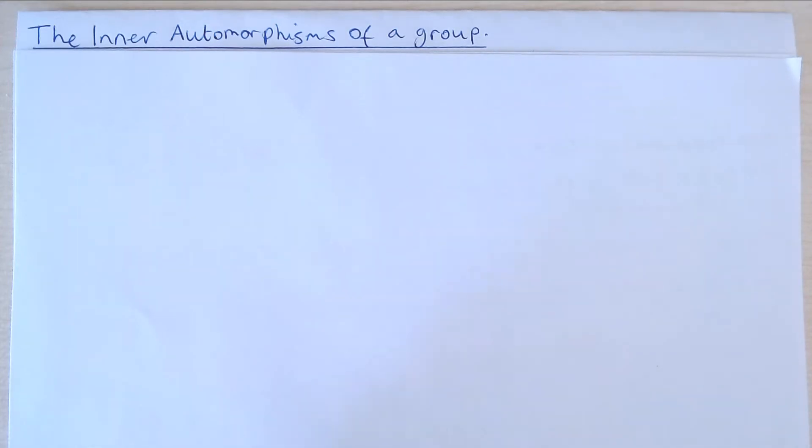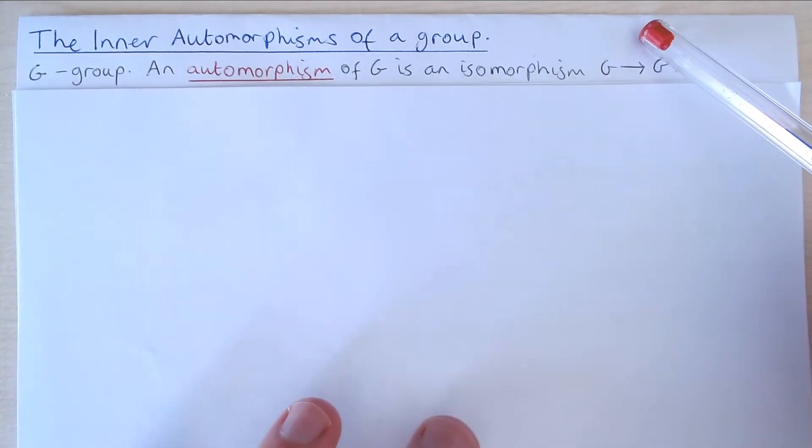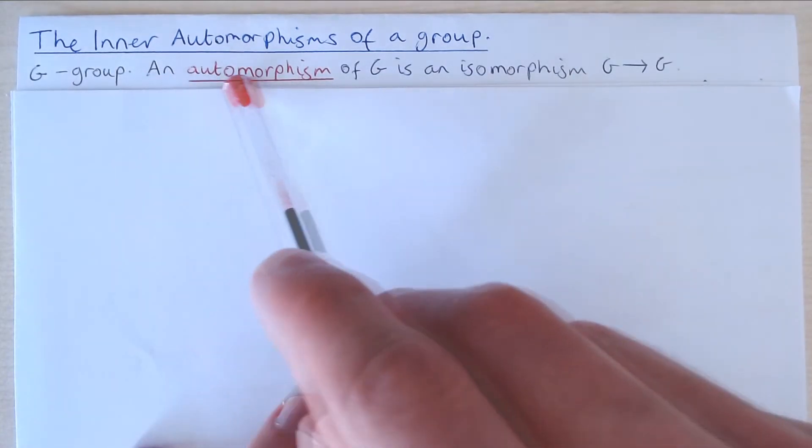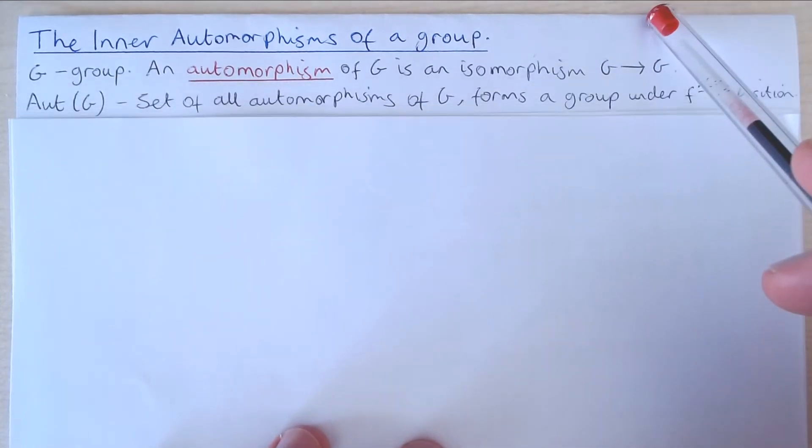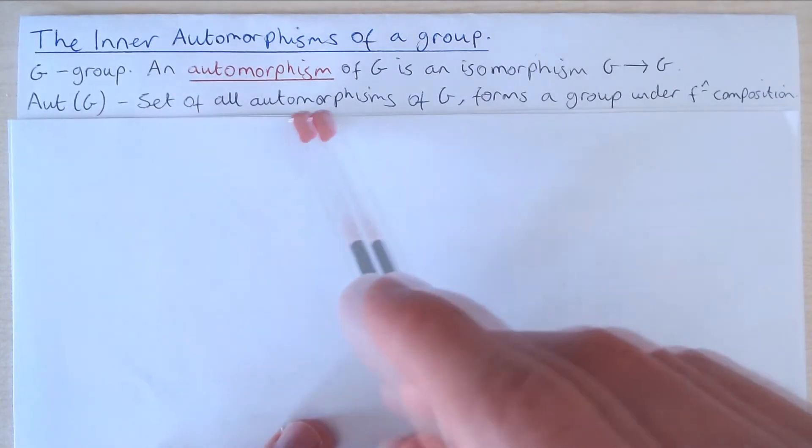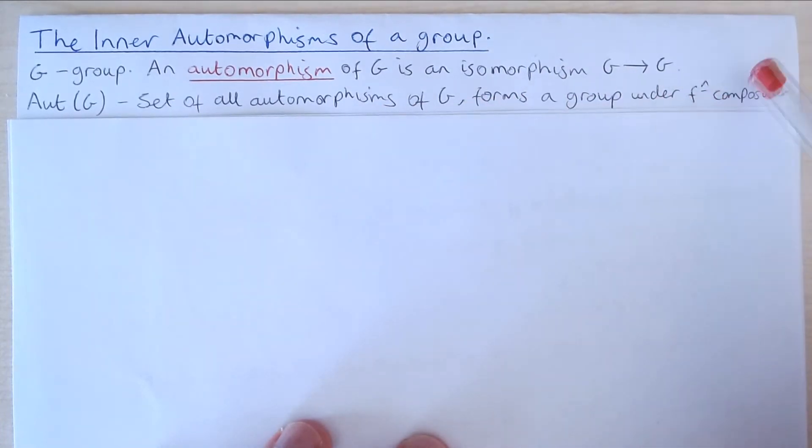In this video we will look at the inner automorphisms of a group. So G is a group. Recall that an automorphism of G is an isomorphism from G to itself. Aut(G) denotes the set of all automorphisms of G and this forms a group under composition of functions.